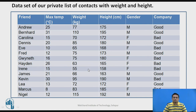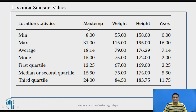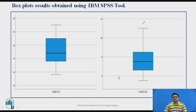This is the data considered for analysis — a contact list with 14 different instances, 14 different persons. The attributes stored are name, temperature, weight, height, gender, and company. Three attributes are quantitative and three are qualitative. For the weight attribute, 55 is the minimum weight, maximum weight is 115, and 79 is the average value, along with mode, first quartile, and second quartile values.